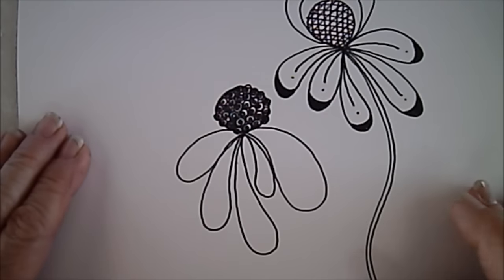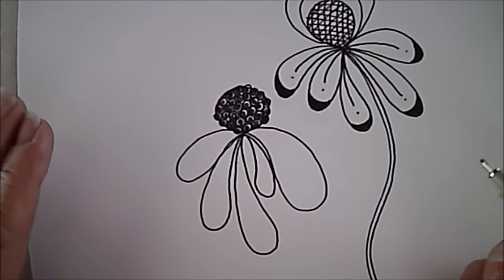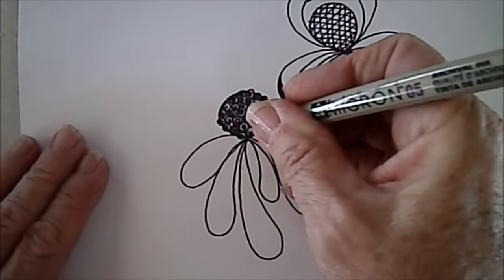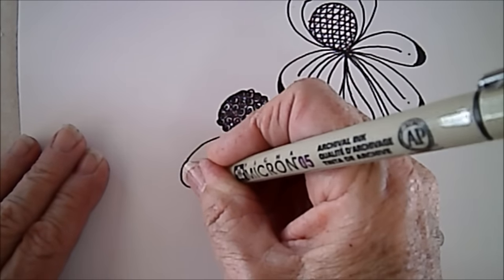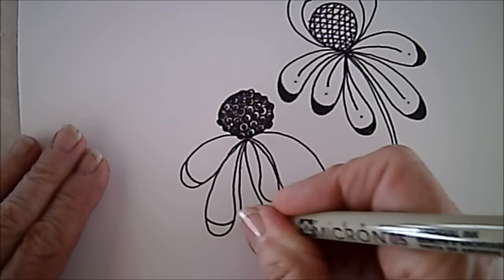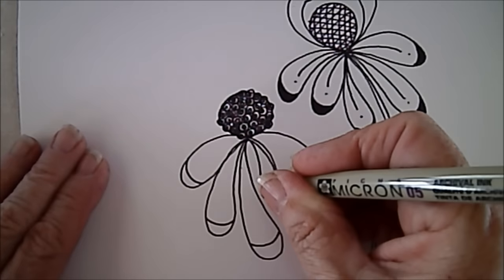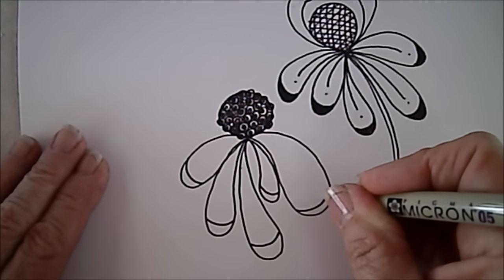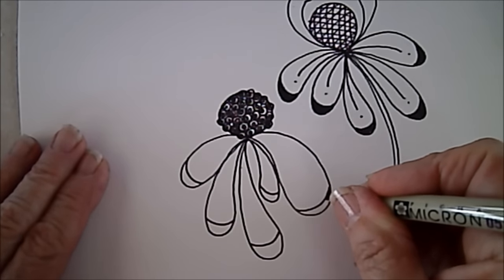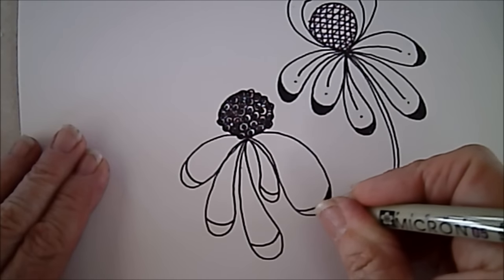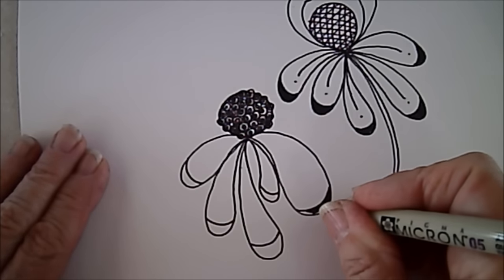There we have filled it in with those little Bronx Cheers, and that colors in really nice. So that's another way that you can fill that in. Again, I'm going to take off those tips and fill them in. And this is Flea.